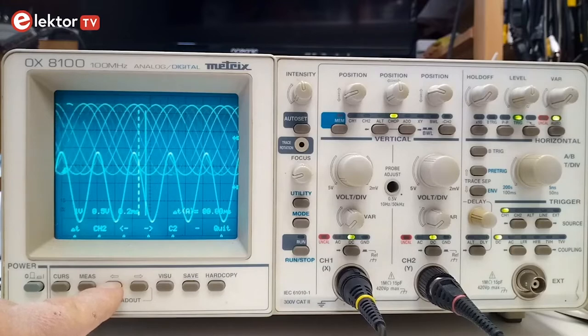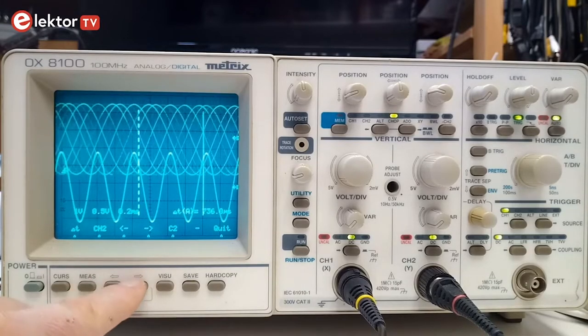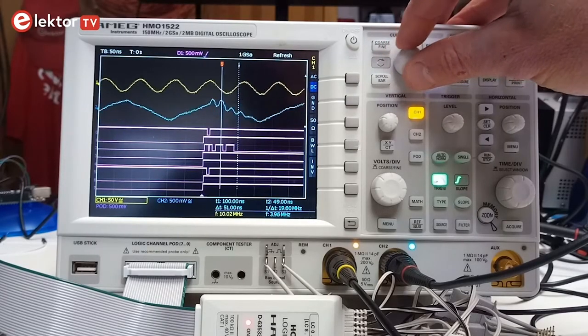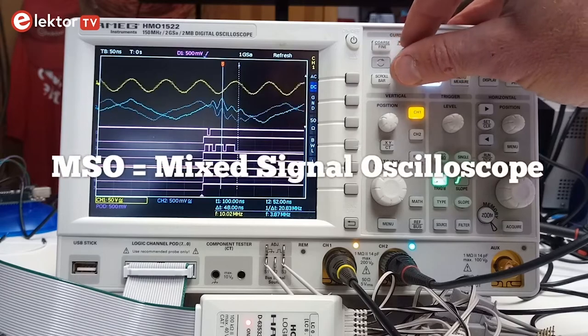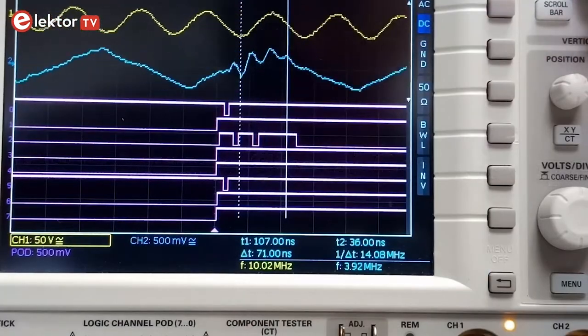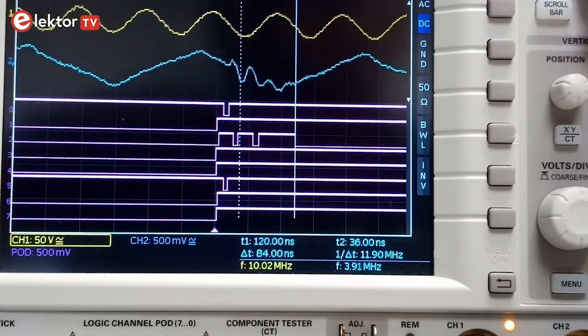There have been hybrid oscilloscopes as well that could do both, but you don't want one of those either. By the way, do not confuse these hybrid oscilloscopes with so-called mixed-signal oscilloscopes, or MSOs, as these are DSOs with special features for digital signals and communication buses and things.